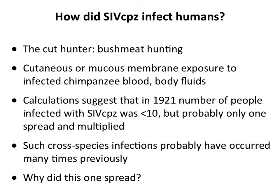We think the virus got from a chimp to people through bushmeat hunting. Someone hunting a chimpanzee killed it, and while dressing it in the field they got cut - blood flowed into their wound, the chimp was viremic, and the virus replicated in the human since we are 99 percent genetically similar to chimps. Calculations suggest that in 1921 fewer than 10 people - probably just one hunter - were infected with SIVcpz, and that single individual gave rise to all the diversification we see today.